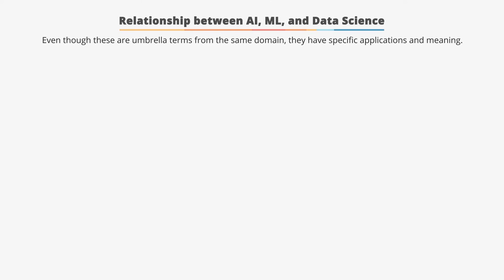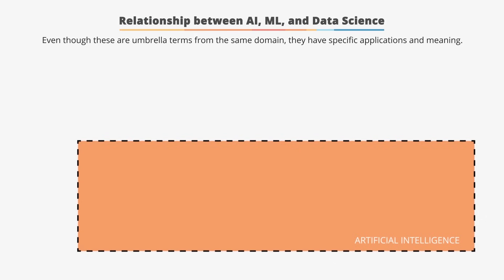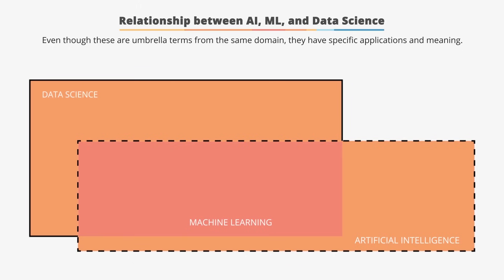Even though the terms artificial intelligence, machine learning, and data science fall in the same domain and are connected to each other, they have their specific applications and meanings. Artificial intelligence systems mimic or replicate human intelligence. Machine learning provides systems the ability to automatically learn and improve from experience without being explicitly programmed. Data science is an umbrella term that encompasses data analytics, data mining, machine learning, artificial intelligence, and several other related disciplines.